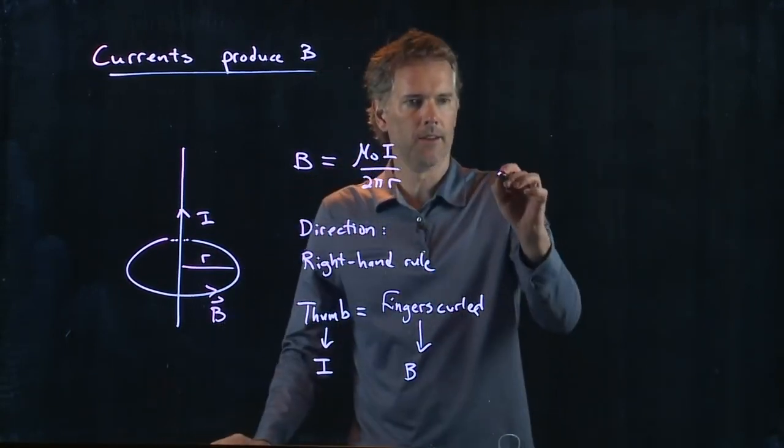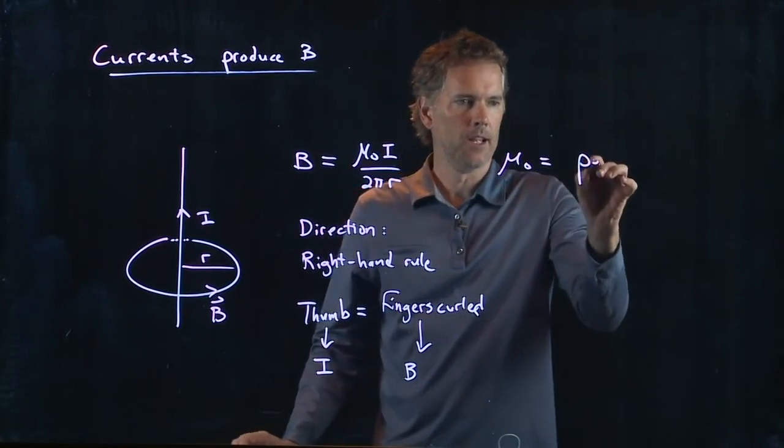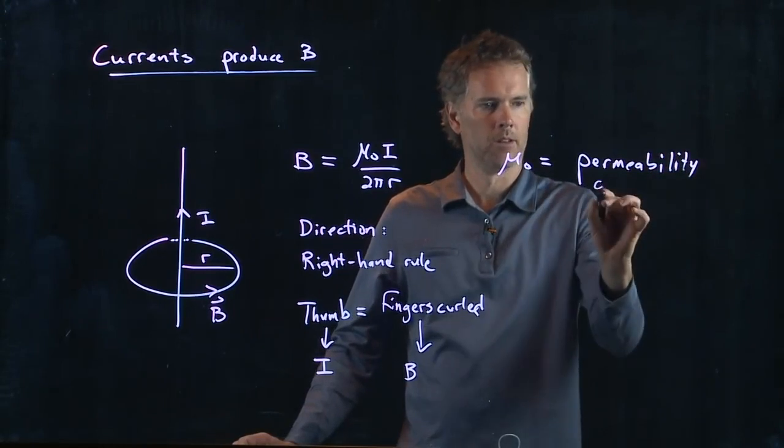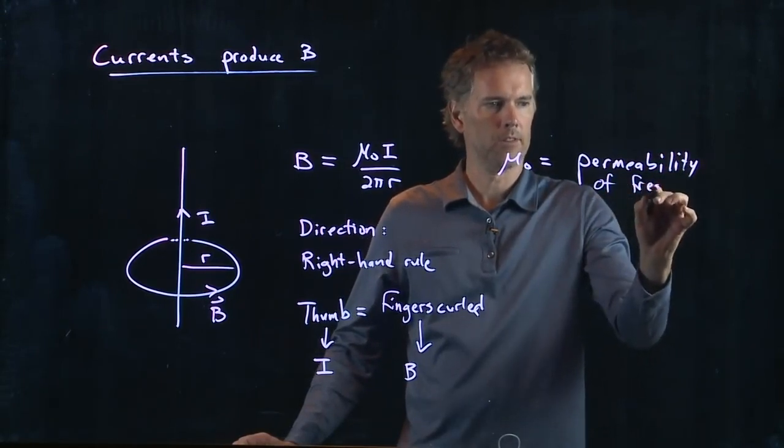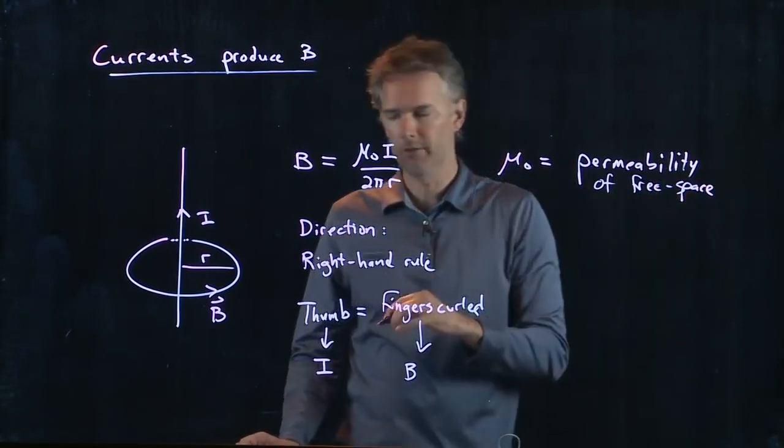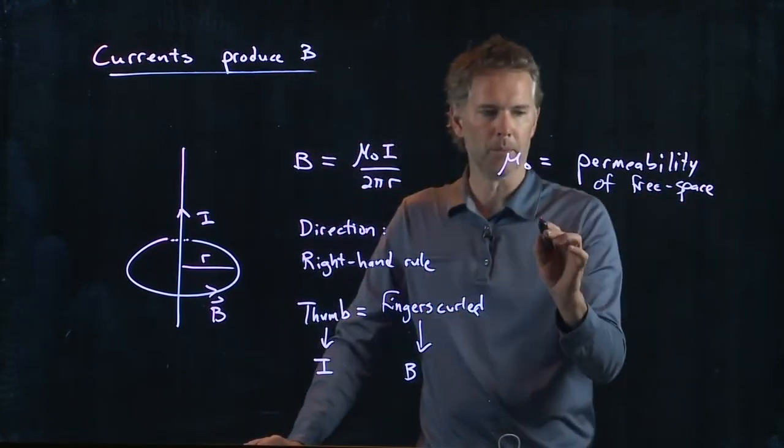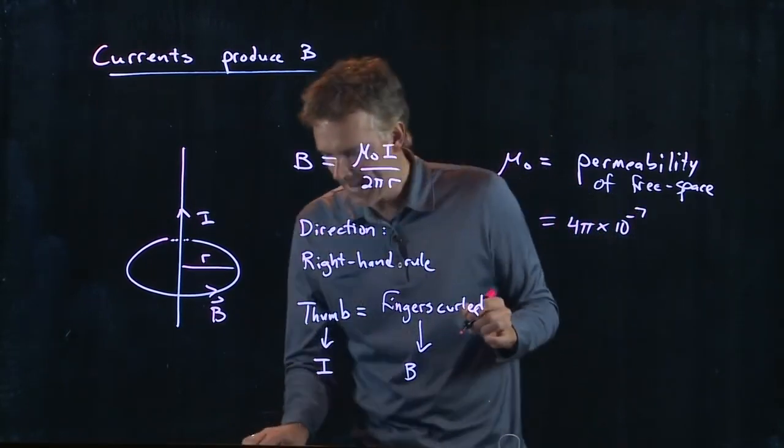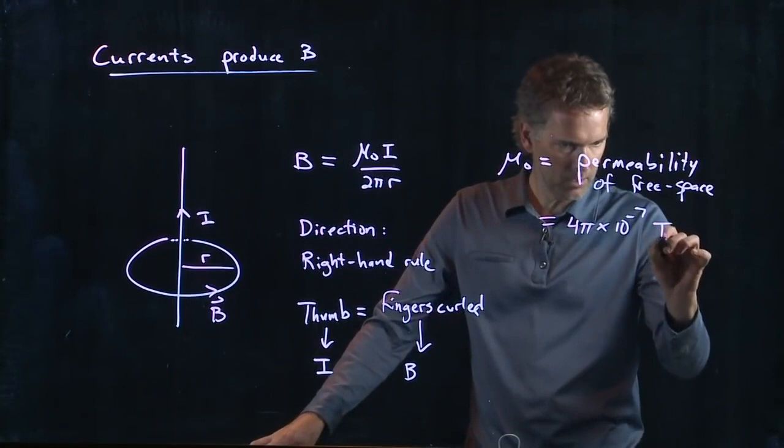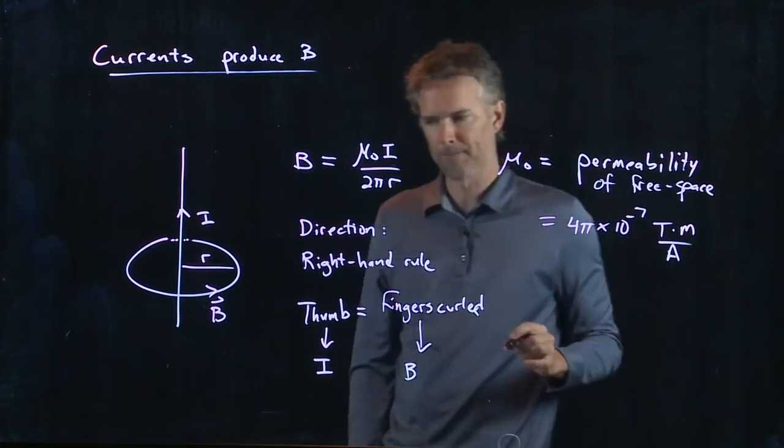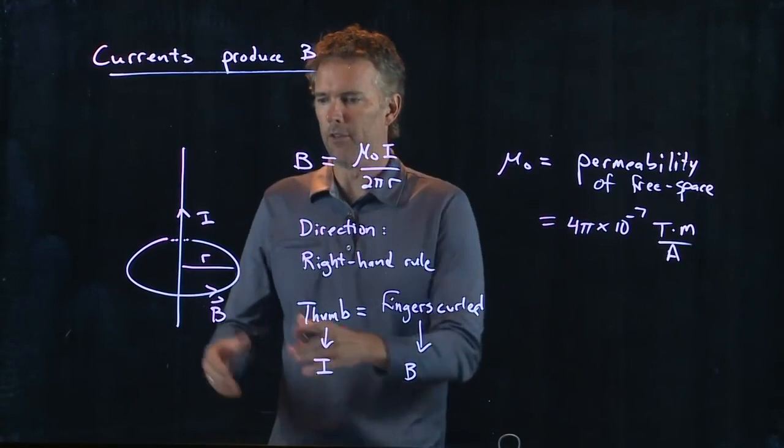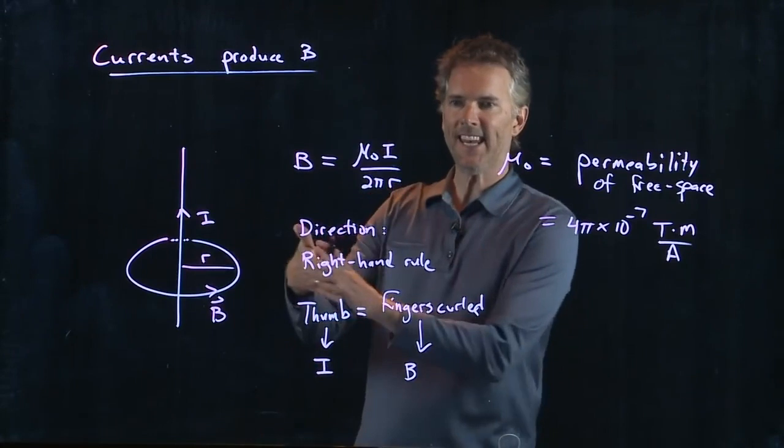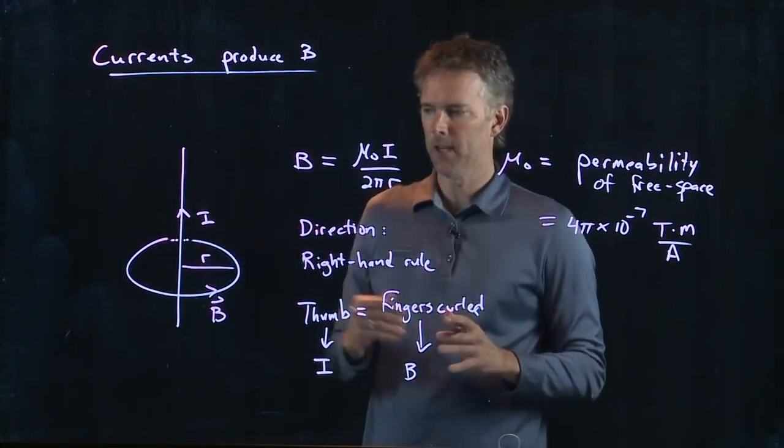What is this mu-naught? Mu-naught is the permeability of free space. Just like with the electric field, we had the permittivity of free space. Now we have mu-naught, which is the permeability, and it's 4 pi times 10 to the minus 7, and the funky units on it are tesla meter per amp. So that's the strength of the B field at any radius, at any distance from a current carrying wire.